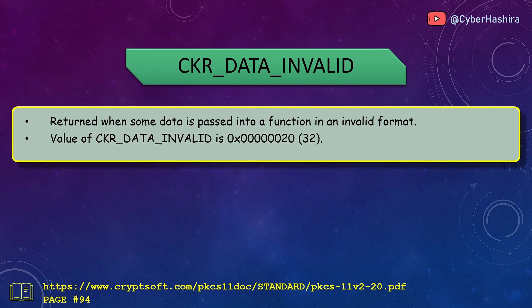CKR_DATA_INVALID is returned when invalid data is passed into a function — for example, passing an uninitialized pointer variable. You may also see this return code when a decrypt operation fails. The value of CKR_DATA_INVALID is 20 and can be read about on page 94.